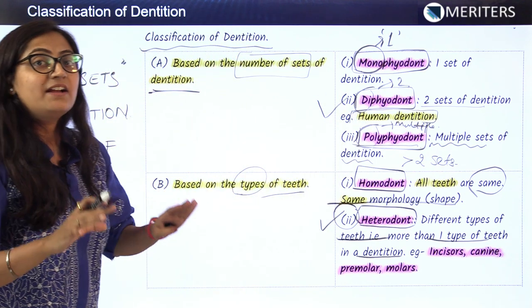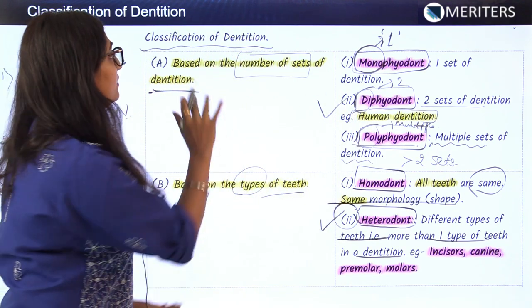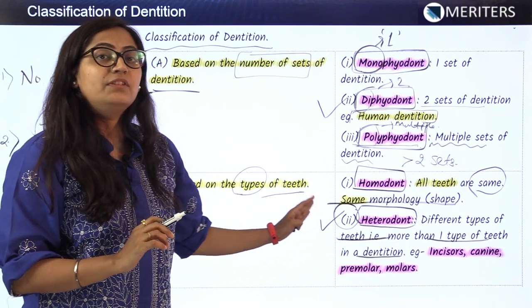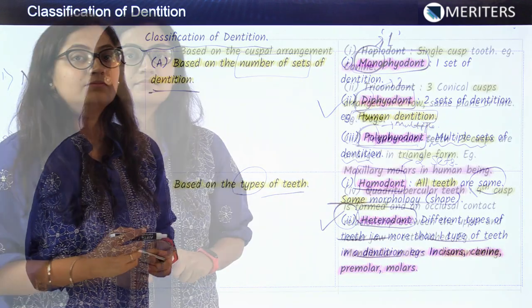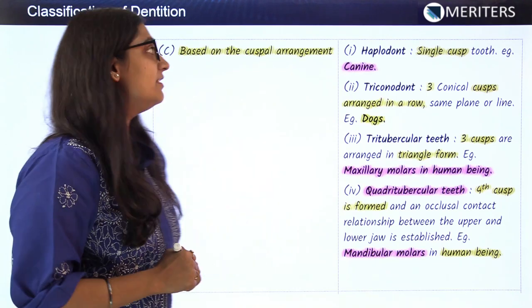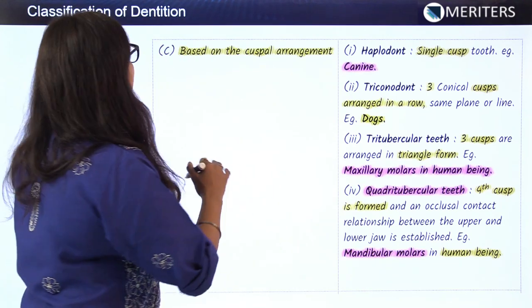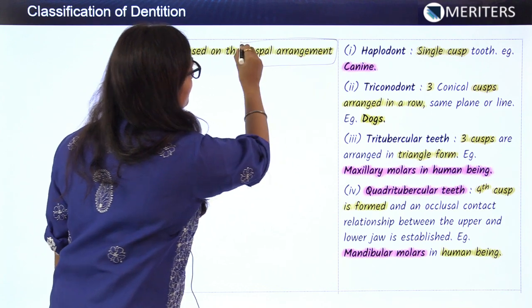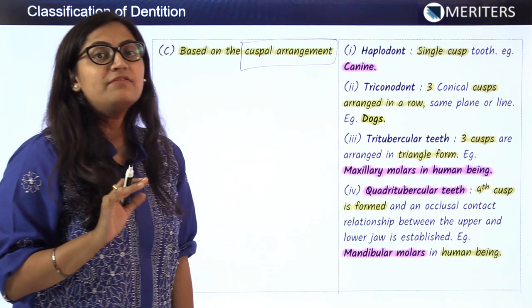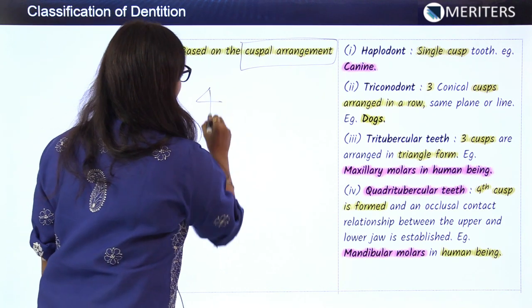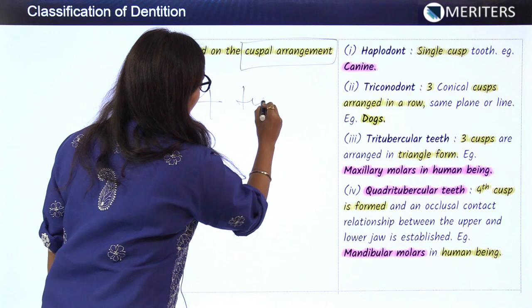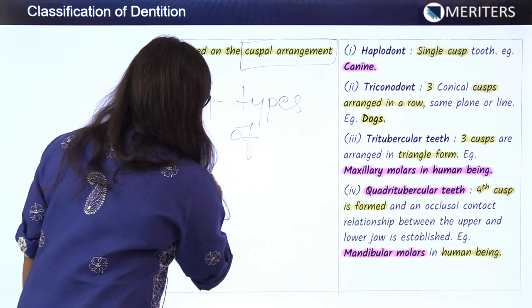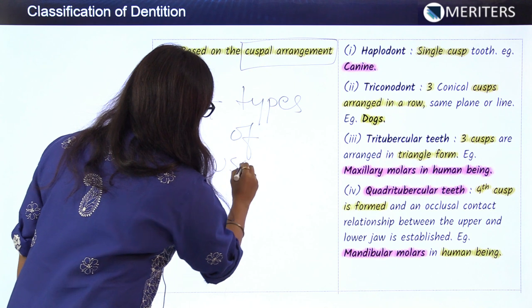This is how we classify dentition based on the number of sets and the type of teeth. Another point on which we differentiate or classify dentition is the cuspal arrangement. There are four different types of cuspal arrangement.